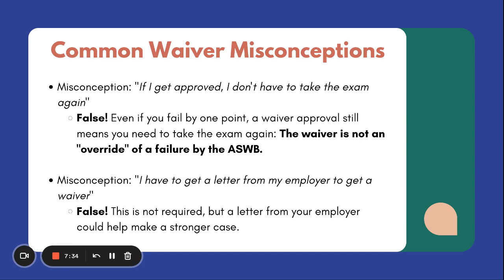Now we're going to cover some misconceptions, because I get questions all the time about what the waiver is, what it does, what it allows you to do, and what it does not allow you to do. The first misconception is: if I get approved, I don't have to take the exam again. That is false. Even if you did not pass by as little as one point, you will be sitting for the exam again. A waiver approval means you have to take the test again — it's just that you will be taking it sooner than the 90-day waiting period. The waiver is not an override saying that now you get a pass. It's just allowing you to sit again in a shorter amount of time. There is never an override from this waiver that allows you to override a failing score.